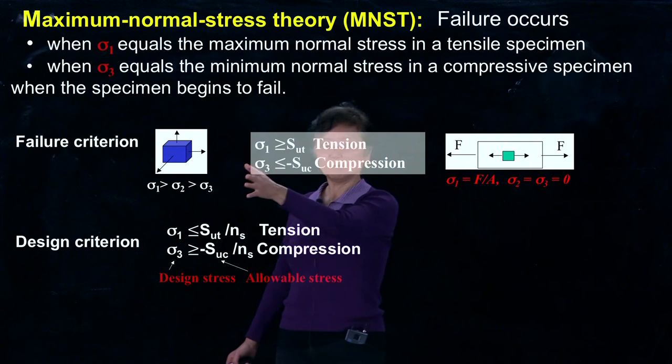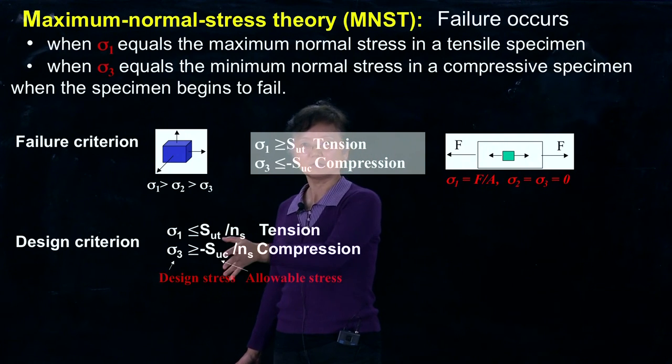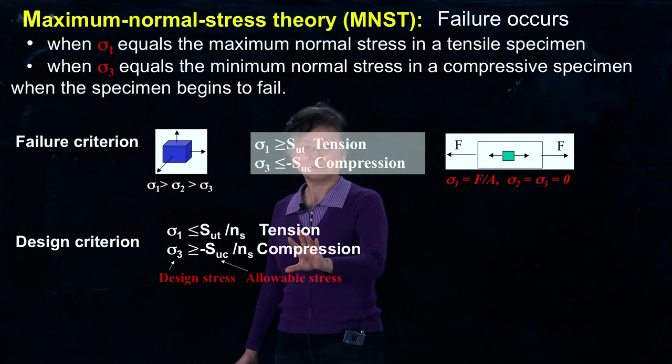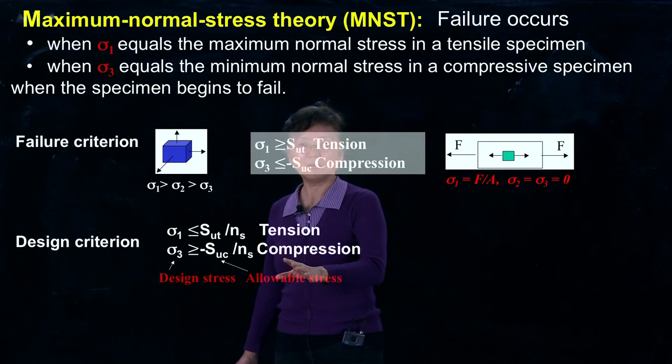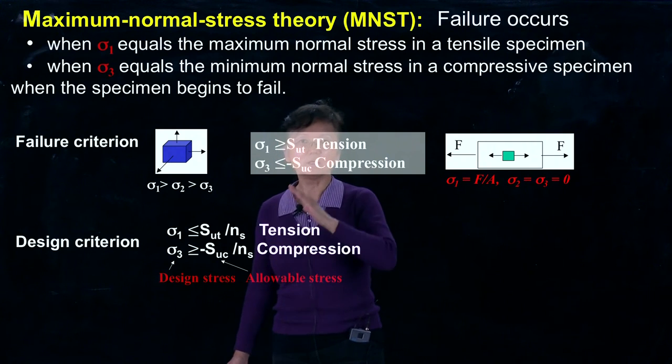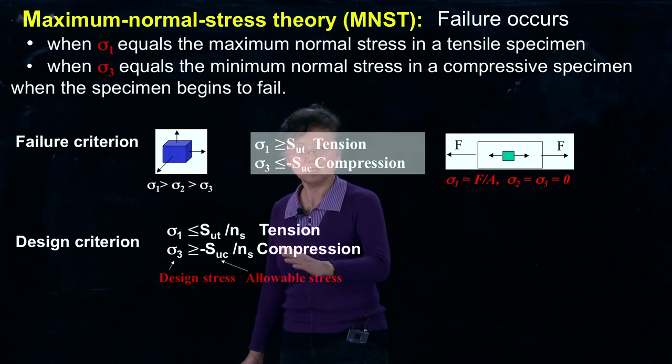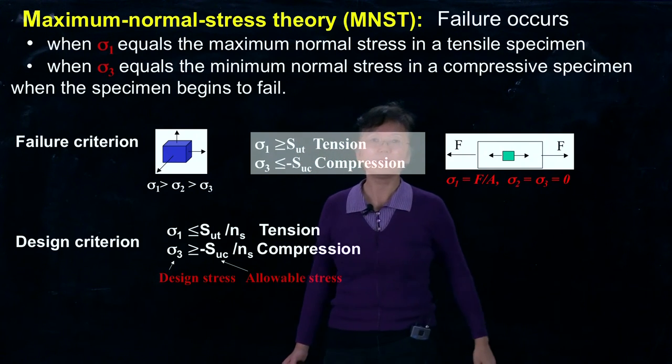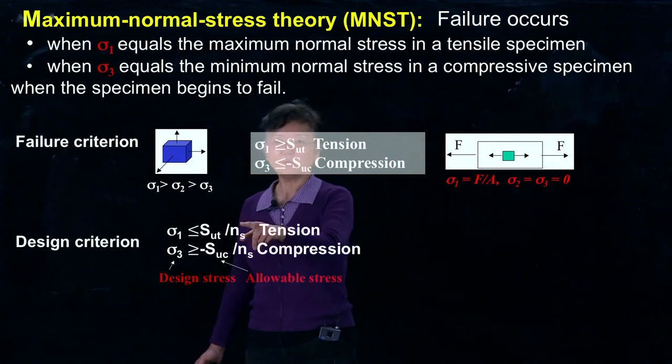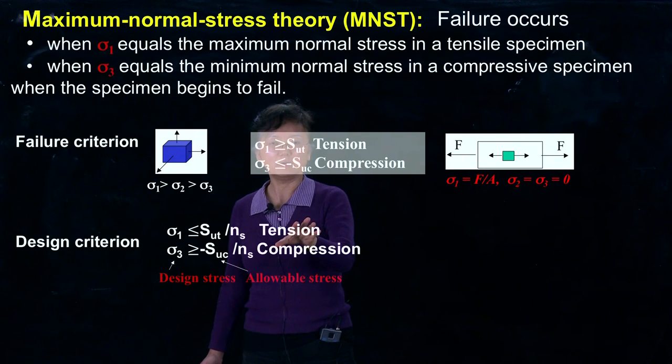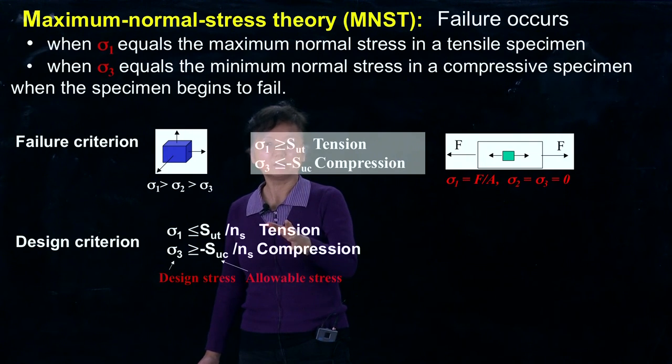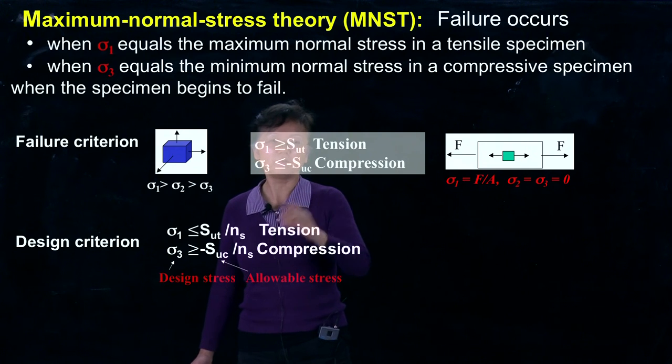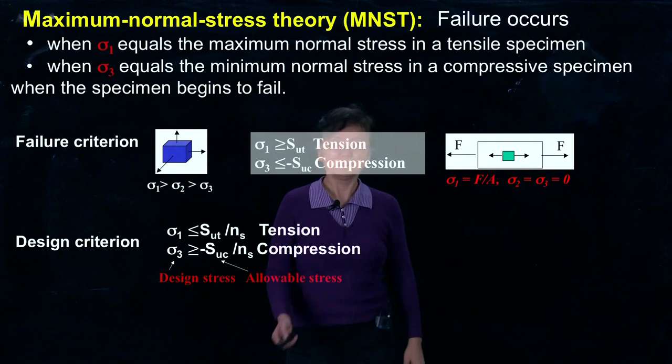We call σ1 and σ3 working stresses, but the strength is the allowable stress. The marginal stress that can go to the limit is the strength of the material. Why do we still allow the equal sign? Because we have the factor of safety. Factor of safety is given to us. This is the margin for a part's stress state to failure.